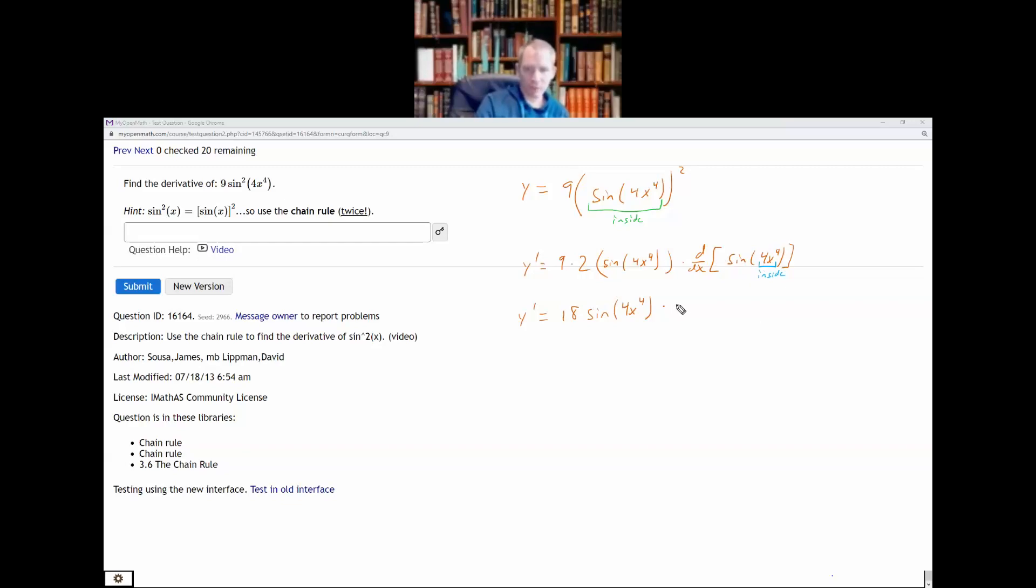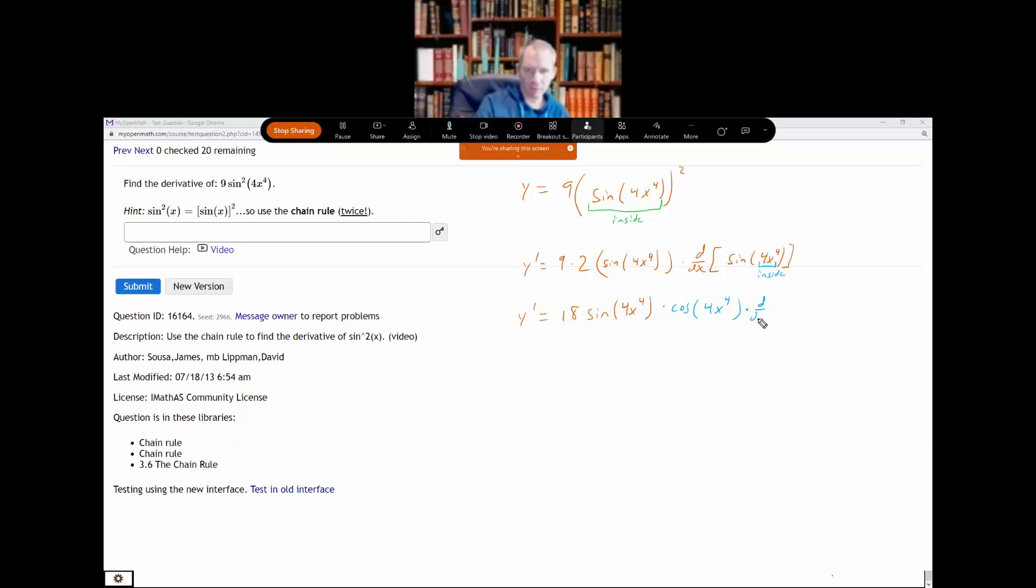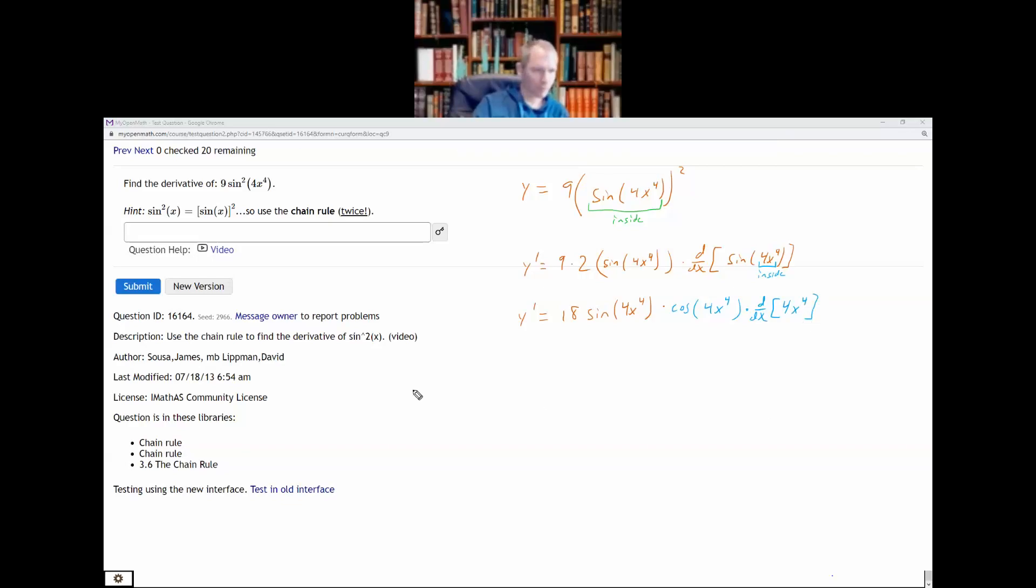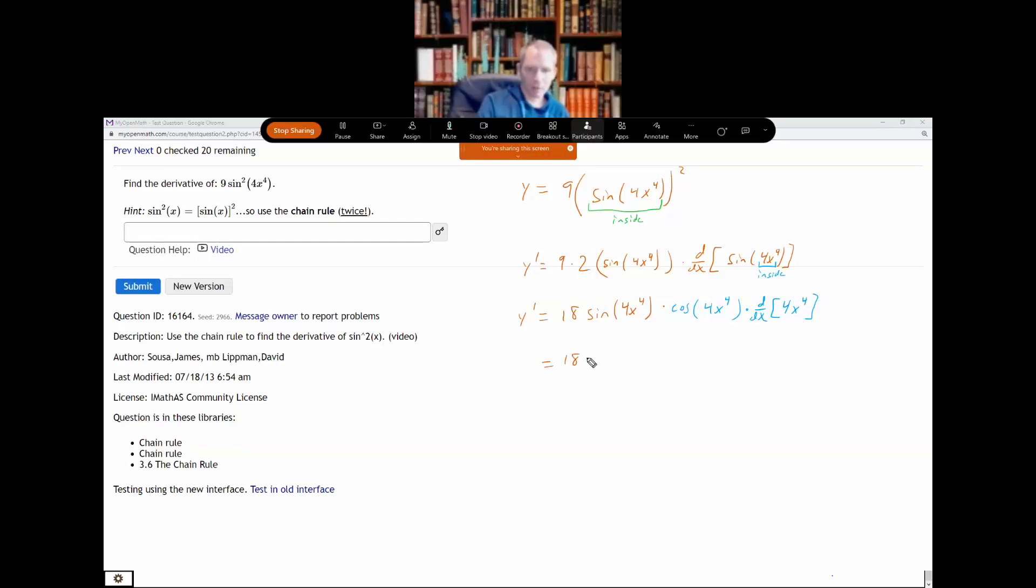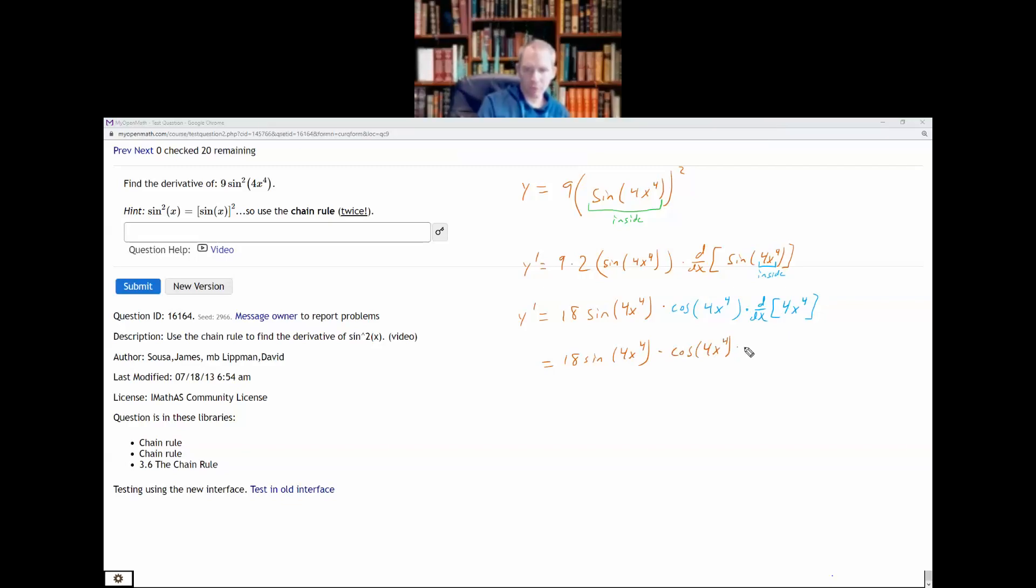So the derivative of sine of stuff is cosine of stuff. Chain rule says leave the inside function alone and then multiply by the derivative of the inside function.